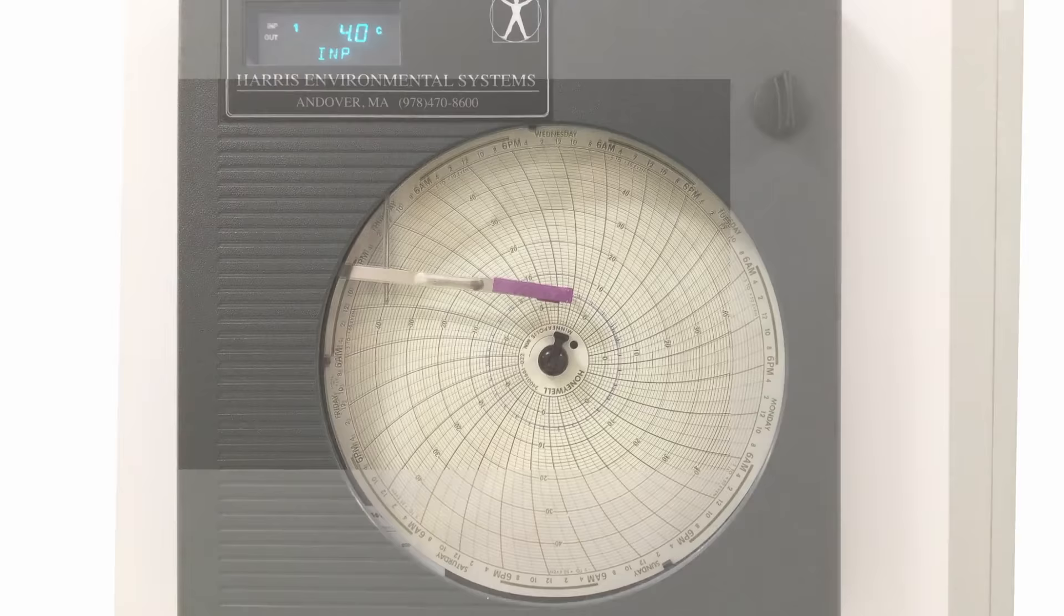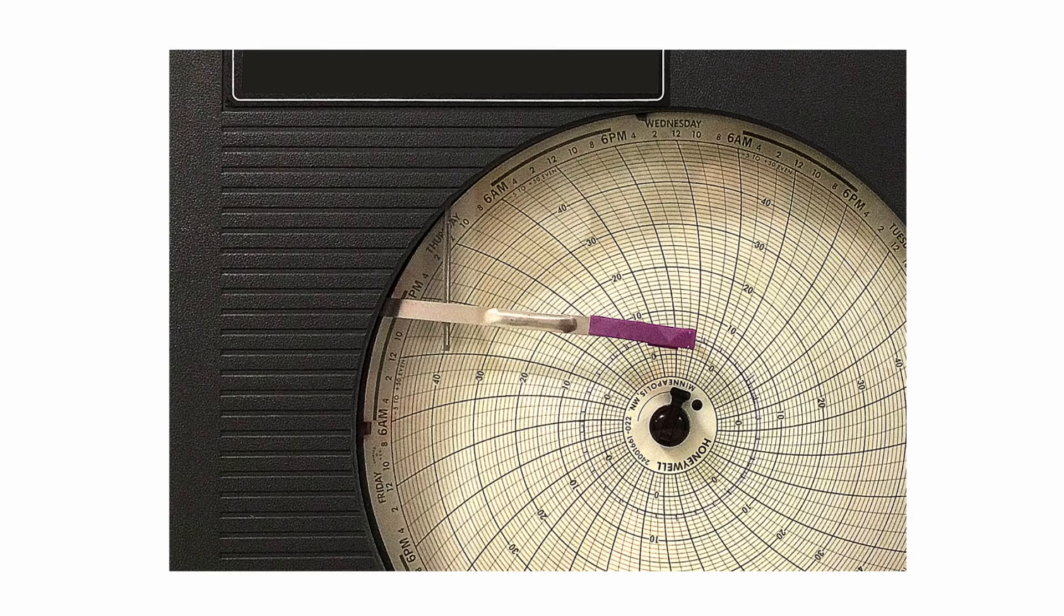So camera phones do have an important place for a means of making very quick portraits of various places in the lab, of the work, of the equipment. You can think about taking the picture and then cropping it, for example, as I did here.